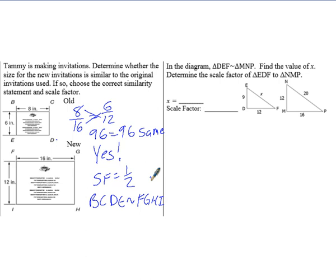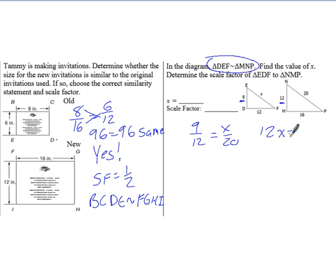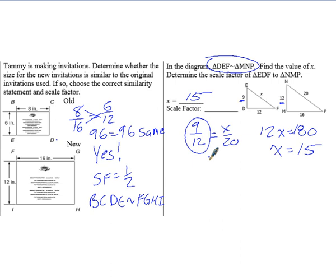For the last problem, looking at triangles, we solve for X and find the scale factor. We're told they are similar, so we pick any two sides: 9 is to 12 as X is to 20. Cross multiplying gives 12X equals 180. Dividing by 12 gives X equals 15. For the scale factor going from EDF to NMP — small to big — 9 over 12 simplifies to 3 over 4.